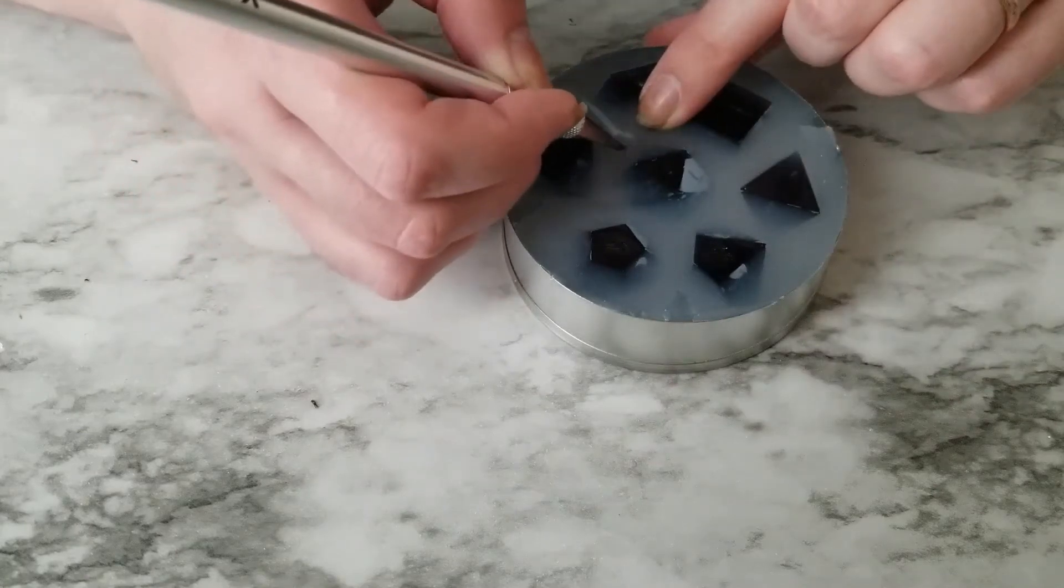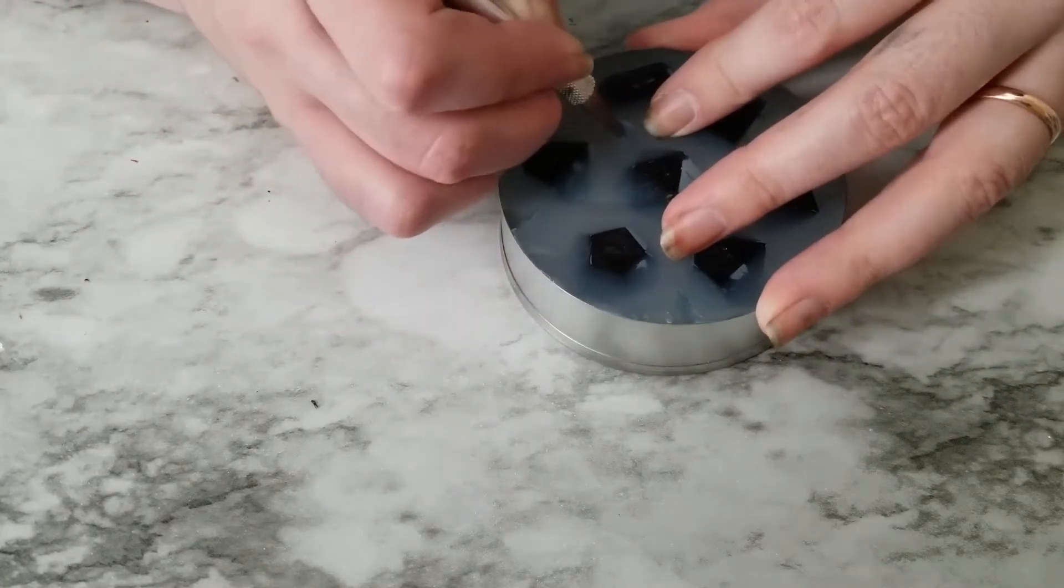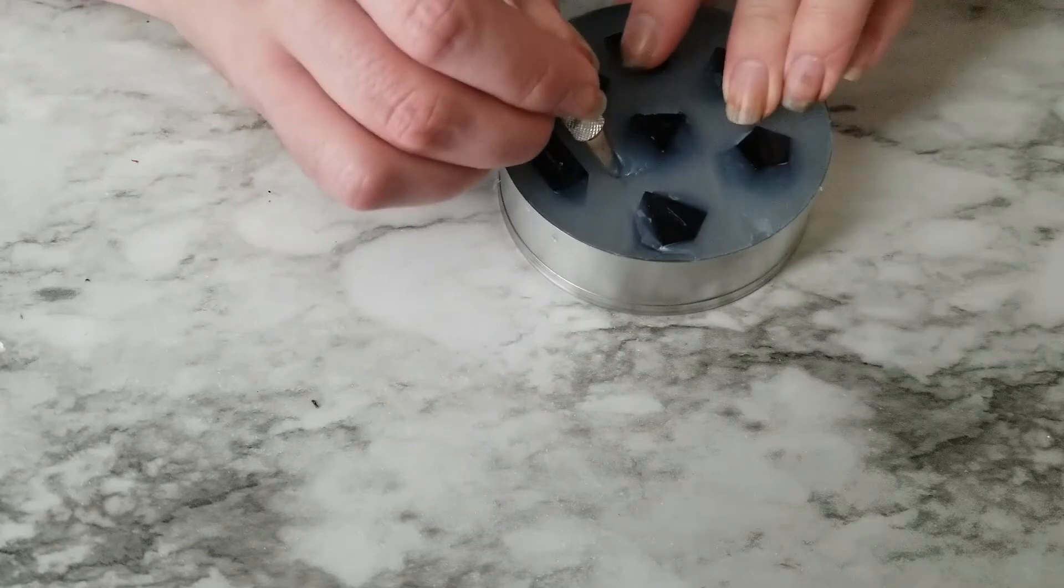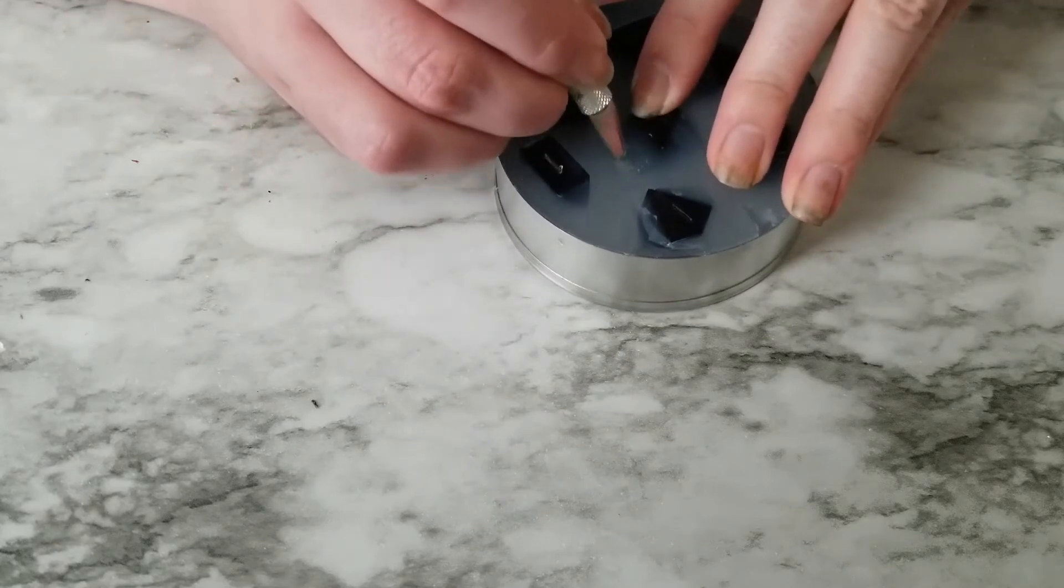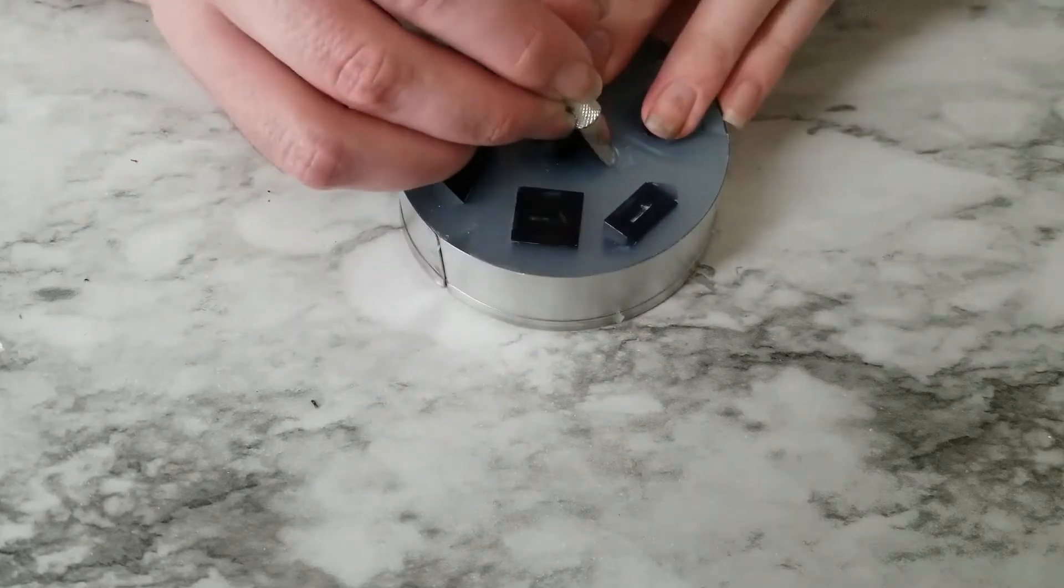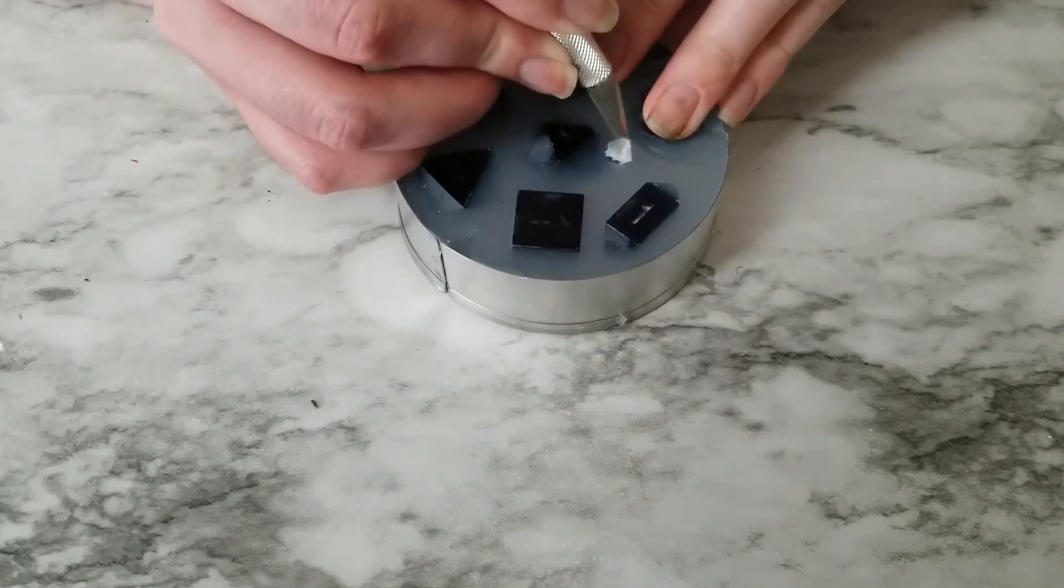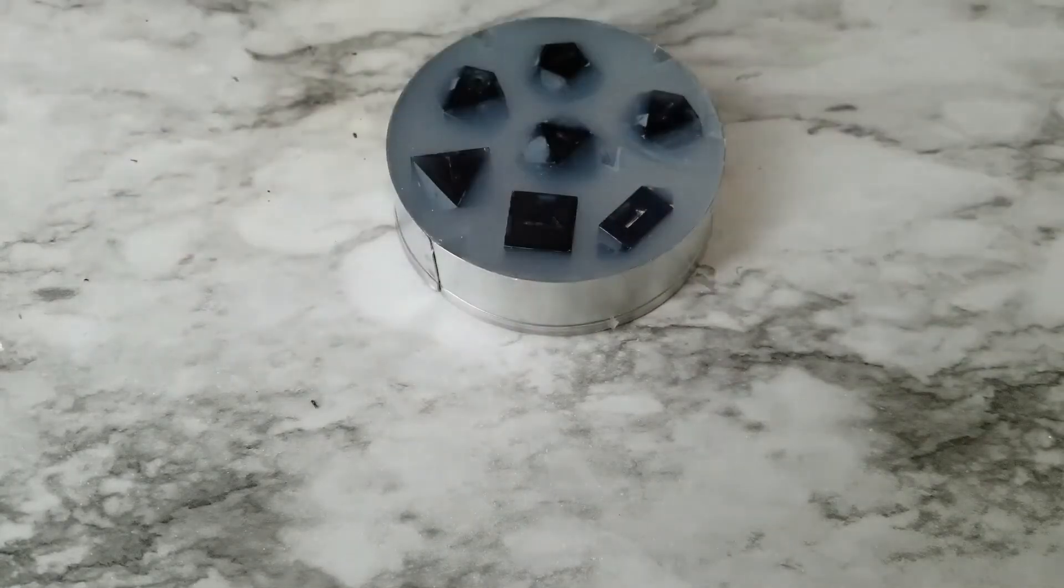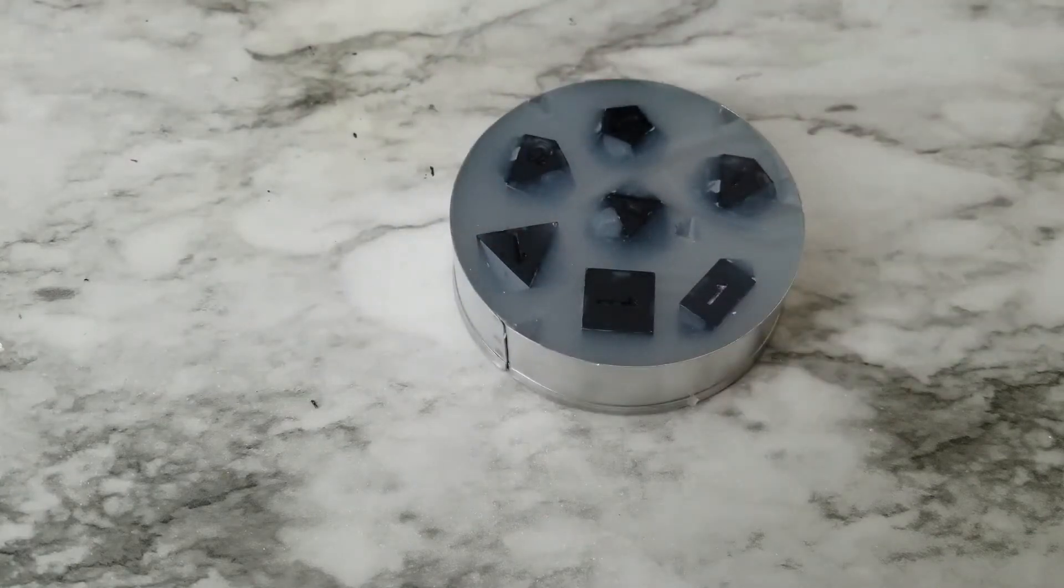Once you have all your keys cut, you're going to take packing tape again and then put it around the outside edge of the cookie cutter. This creates your wall to hold the silicone in for the lid.